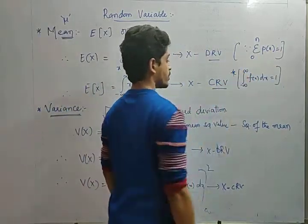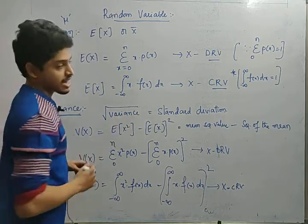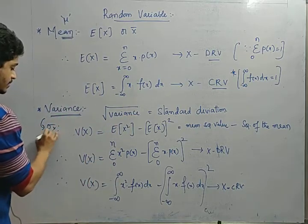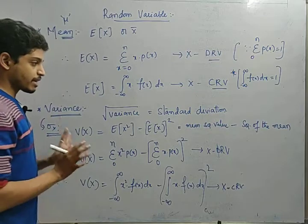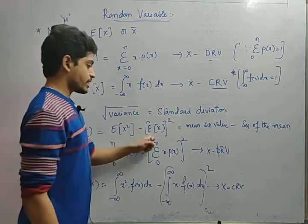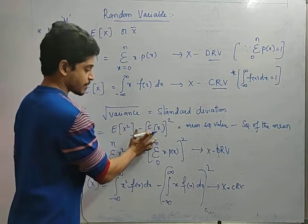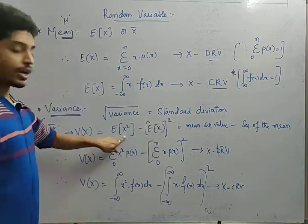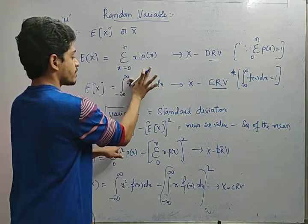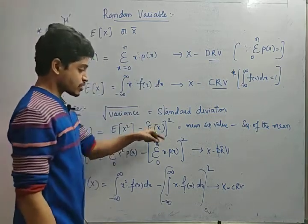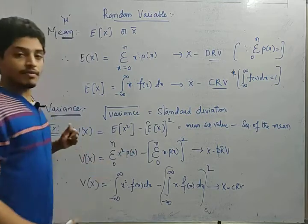These formulas are very important and we often use them in problems to find the constant k in any random variable. Variance is the square of the standard deviation, and we can represent variance as sigma squared. The square root of variance is the standard deviation. The general formula for variance of X is: mean square value minus square of the mean, that is E(X²) minus [E(X)]². By substituting x² we get the mean square value, and applying the square of the mean and subtracting gives the variance.